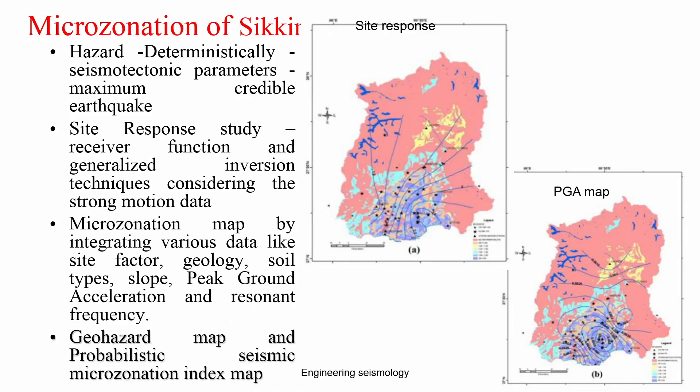They carried out a seismic hazard analysis by deterministic approach considering seismotectonic parameters in the region and the maximum credible earthquake. The site response study was carried out using receiver function and generalized inversion technique considering strong motion data. This work was done by IIT Kharagpur, who set up permanent seismic stations at different parts of Sikkim, collected data, and tried to use that data as part of the study.